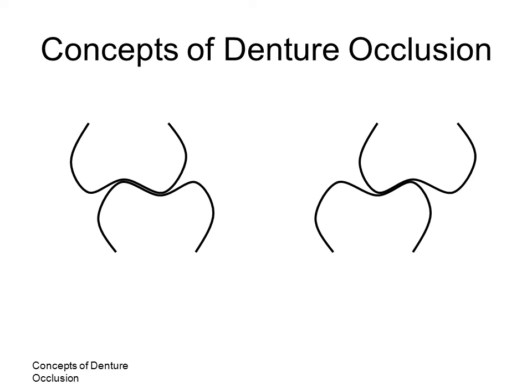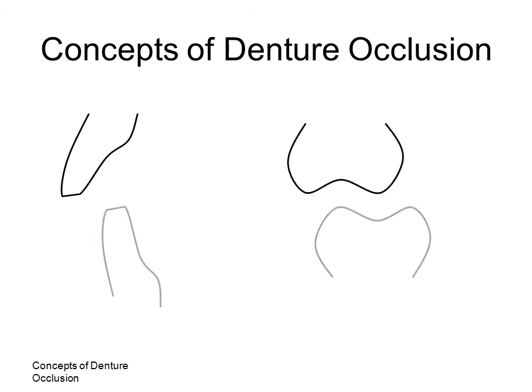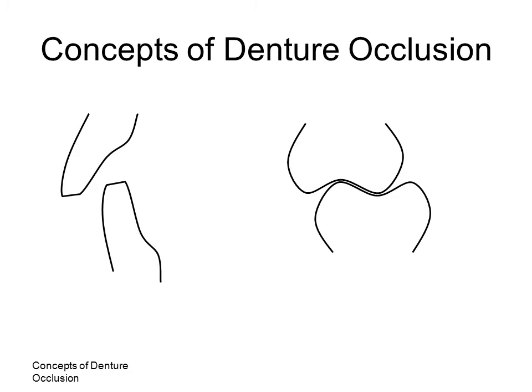Upon closure into centric relation, the teeth will contact simultaneously on both sides of the arch. The cusp form allows continued contact within a range during eccentric movements. In bilateral balanced articulation, there is no contact of the anterior teeth as the teeth close into centric relation. There is minimal overbite and overjet of the anterior teeth, but may have brushing contact in eccentric movement. The steep cusp heights allow for disclusion of the anterior teeth. Teeth in bilateral balanced articulation are set with anterior-posterior and mediolateral compensating curves.